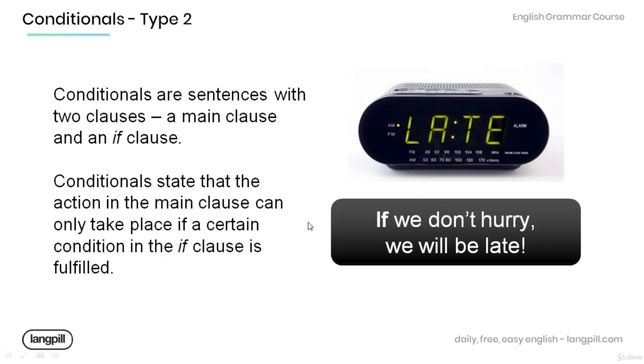Have a look at the example over here. If we don't hurry, we will be late. This is a conditional sentence used to state that the action in the main clause, being late, will take place if we don't hurry.